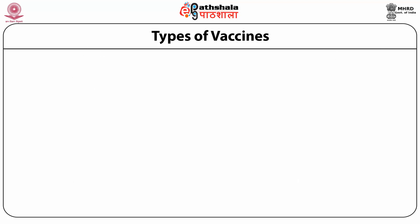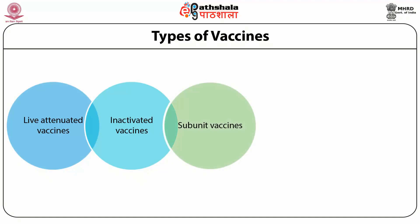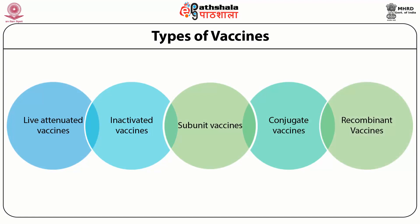Let's now see what are the different vaccines which are available: live attenuated vaccines, inactivated vaccines, subunit vaccines, conjugate vaccines, and recombinant vaccines. We shall discuss each of these vaccines one by one.